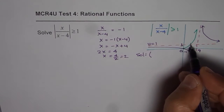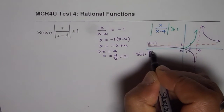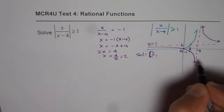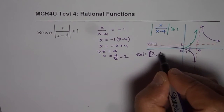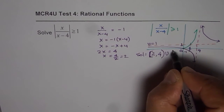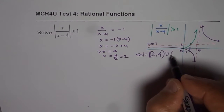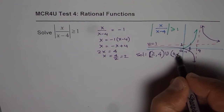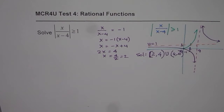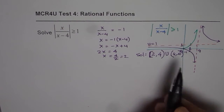We include 2 because of the equality sign, but 4 is not in the domain since it is the vertical asymptote. So the interval is 2 to 4, not including 4. Union with 4 not included to infinity gives us x in [2, 4) union (4, infinity). That's the fast graphical way of understanding and answering this question.